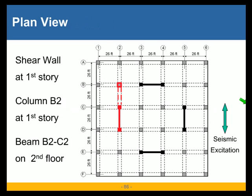Having the seismic excitation in the y-direction, we will determine the design forces for the shear wall on line 2 at the first story, for column B2 again at the first story, and for beam B2C2 on the second floor.